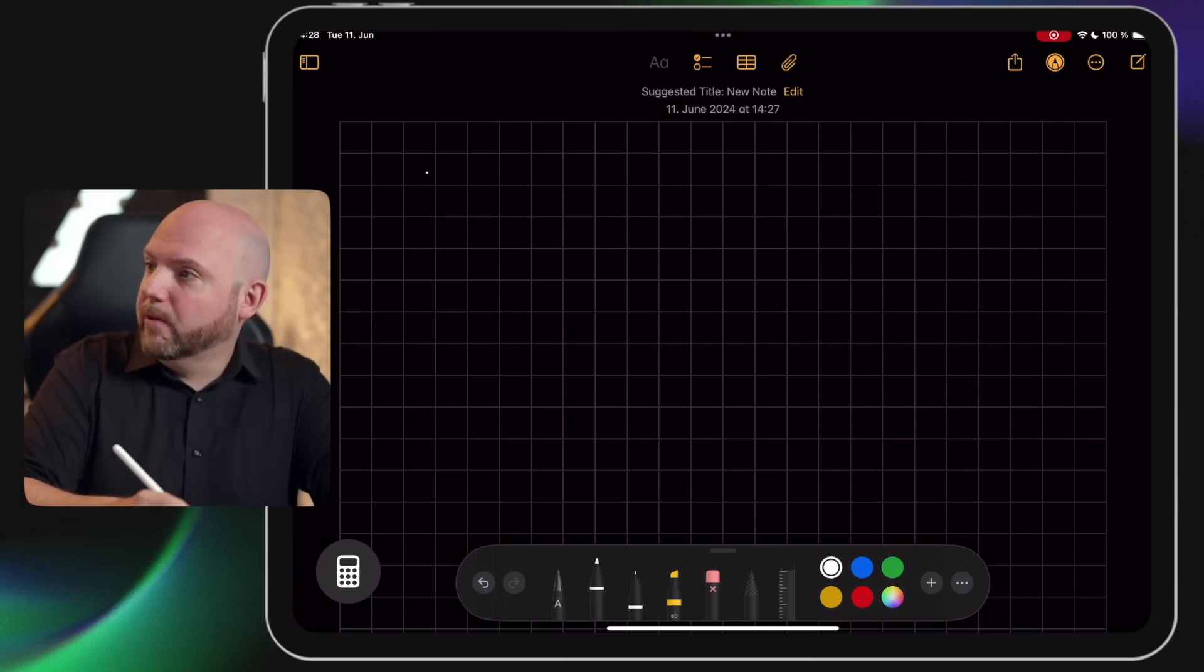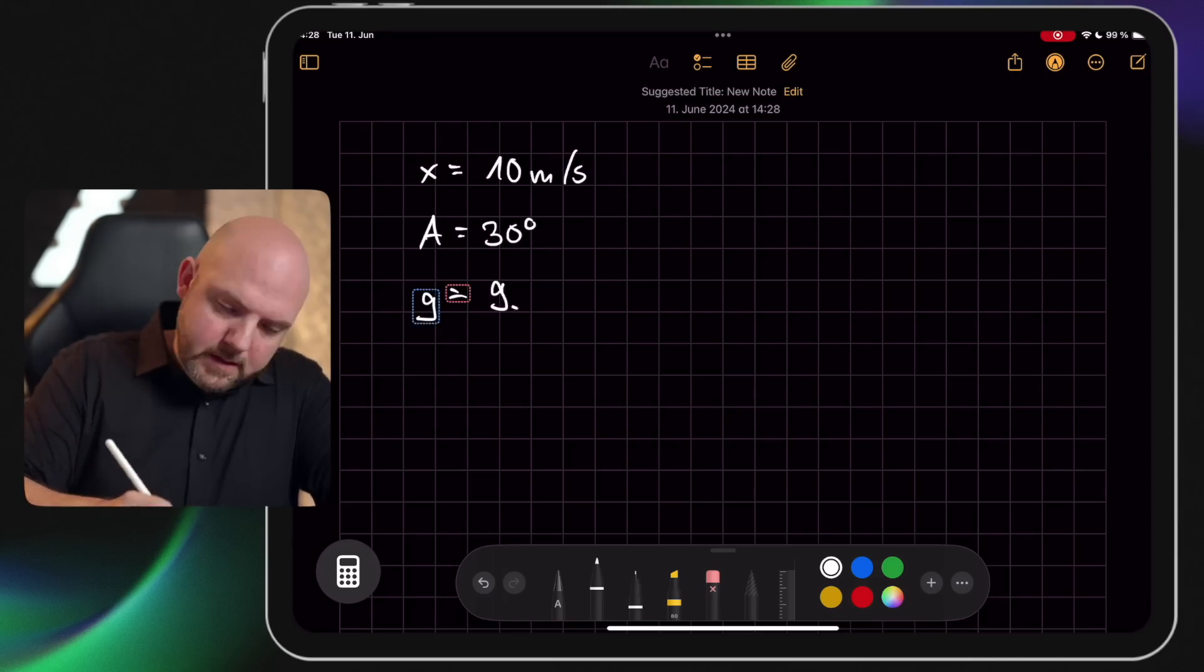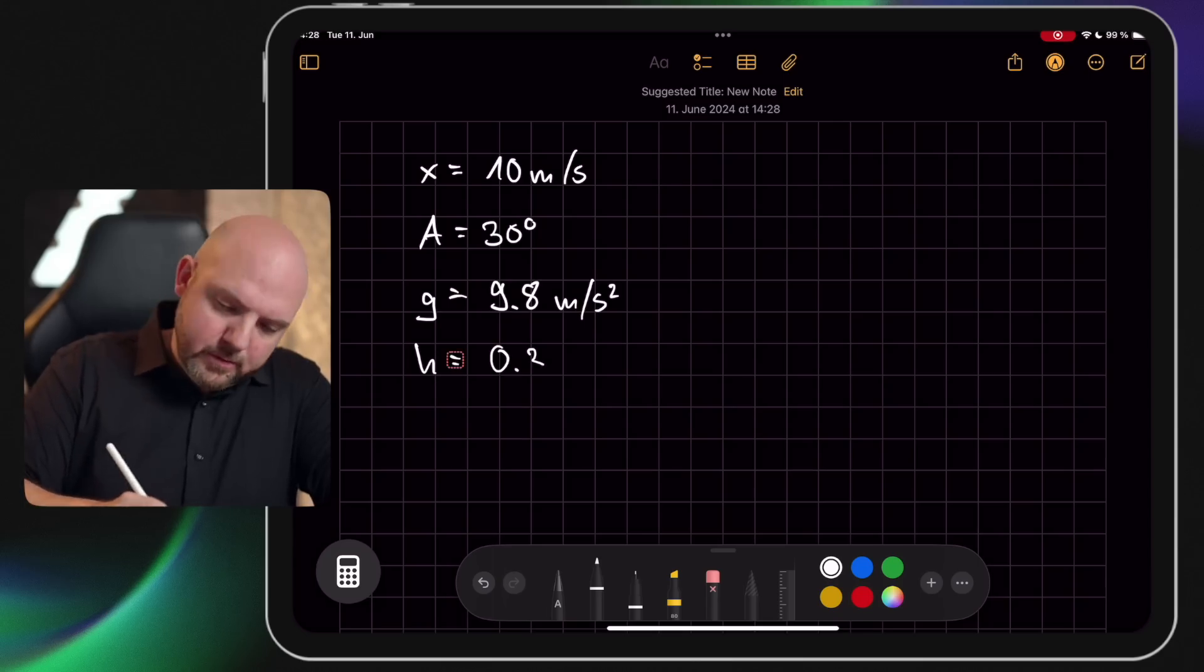Let's try it again what we have on this image. X equals 10 m/s, A equals 30 degrees, G equals 9.8 m/s squared, and H equals 0.3 meters. So these are the numbers that we see on the image. Now let's make the calculation.